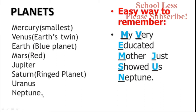This is how to easily remember the planets in order: Mercury, Venus, Earth, Mars, Jupiter, Saturn, Uranus, Neptune.